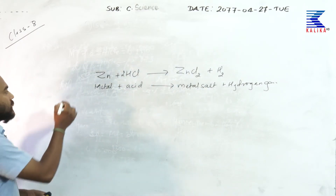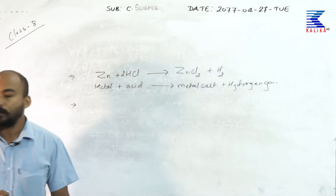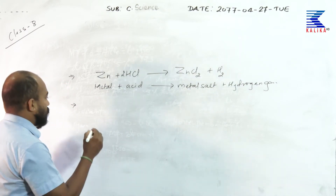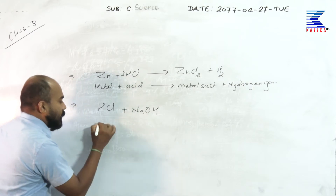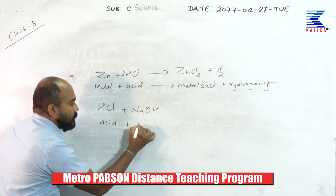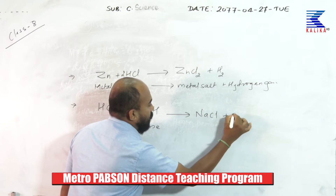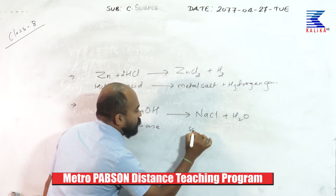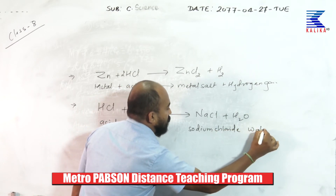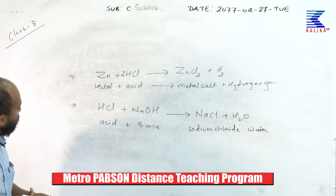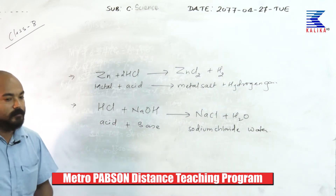The next chemical property is that all acids react with a base to form salt and water. For example, acid HCl plus base NaOH — acid plus base gives salt and water. That means NaCl plus H₂O: NaCl is sodium chloride and H₂O is water, giving a neutral product. This acid-base reaction is known as a neutralization reaction.